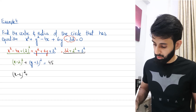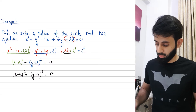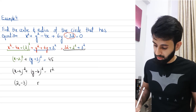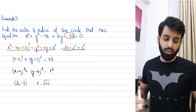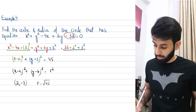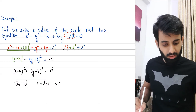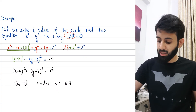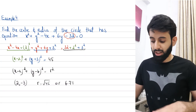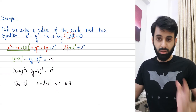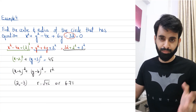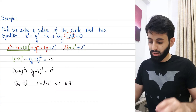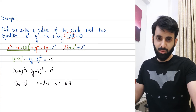Comparing with the general form (x-a)² + (y-b)² = r², the center is (2, -3) and the radius is √45. You can leave it as √45, convert to decimal, or simplify — depending on what the question asks. The key prerequisite for these questions is a solid understanding of completing the square.